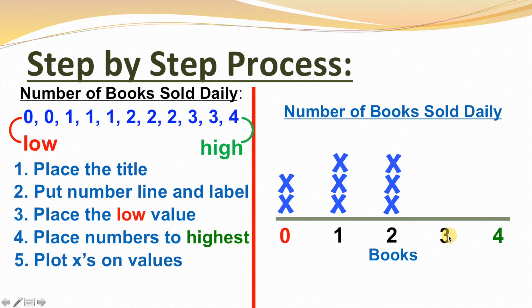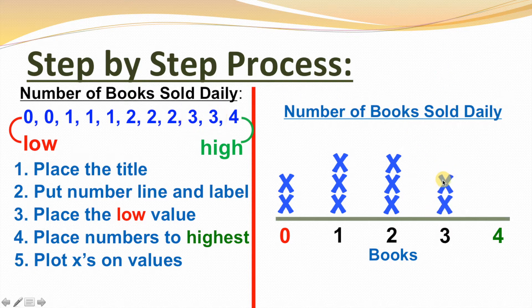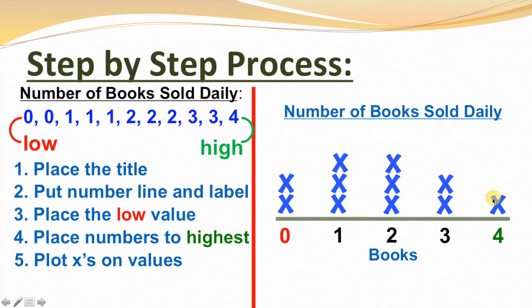For three books — there are two threes in our data, so I'll put two x's here. That means there were two days where three books were sold. And last but not least, four — since there's only one four in our set of data, we'll put one x on top of the four. That means there was only one day where four books were sold.